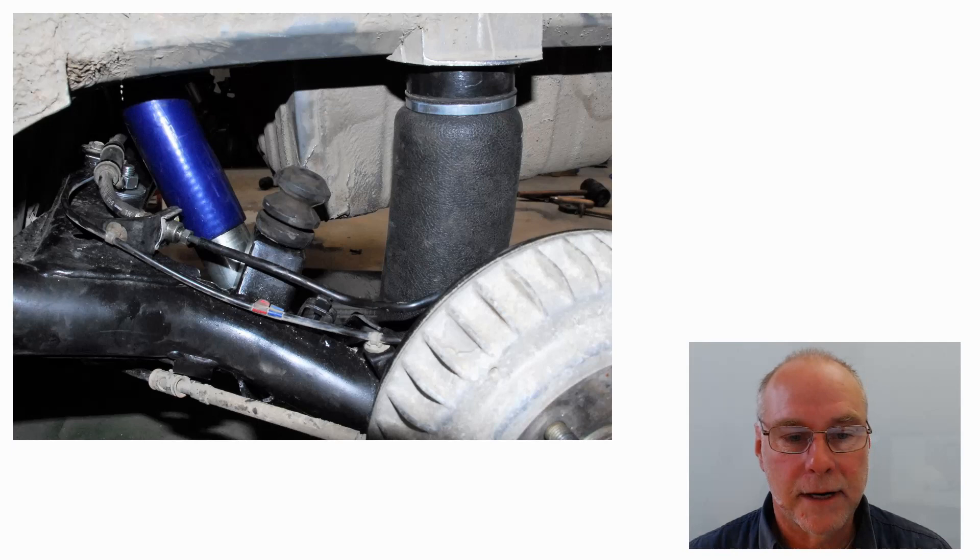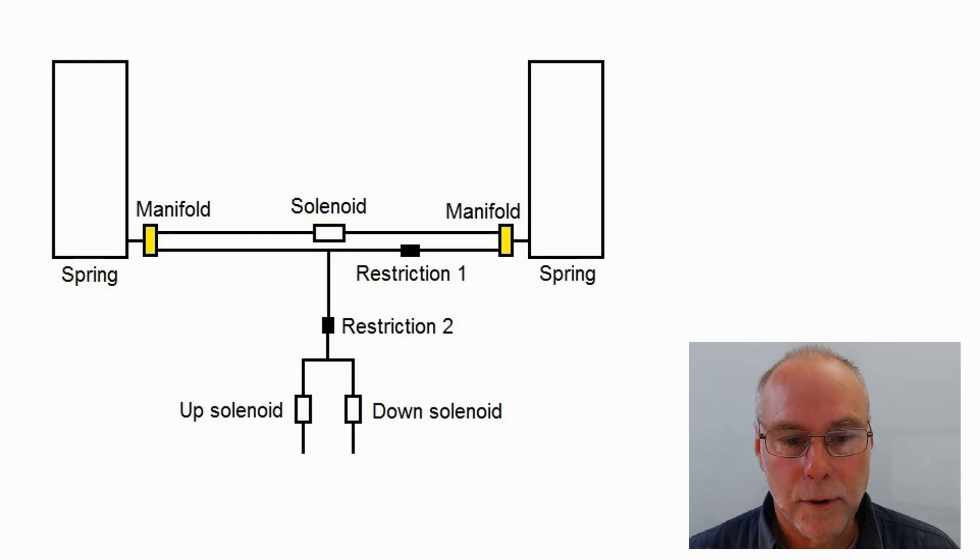Here's the system that I employ, and it's got one really good trick. You can see that there are up and down solenoids at the bottom. You open the up solenoid and air flows into the springs, lifting the ride height. You open the down solenoid and air flows out of the springs, and so the ride height is lowered.